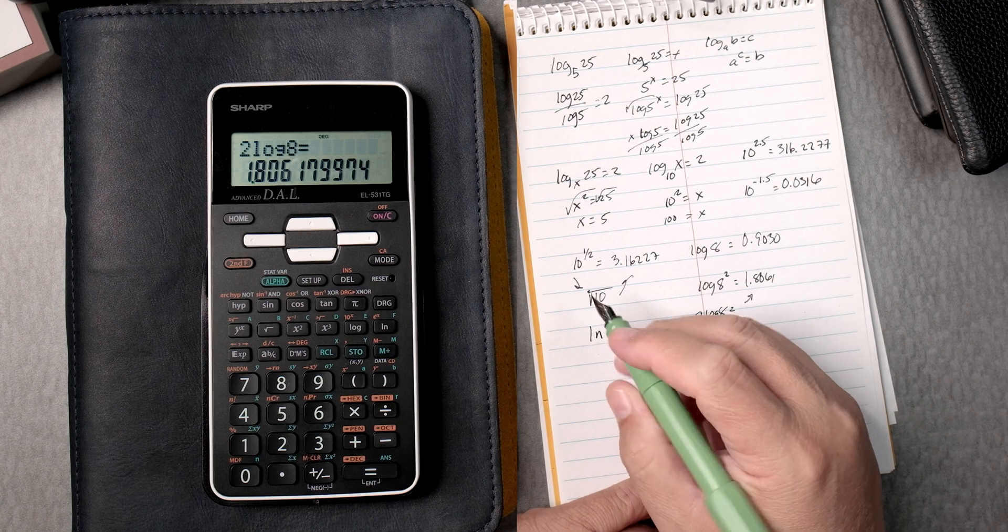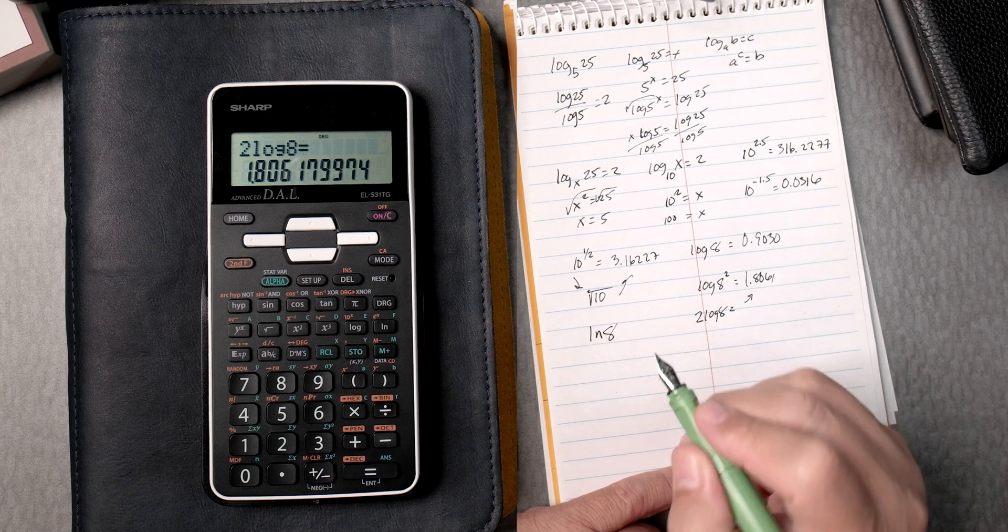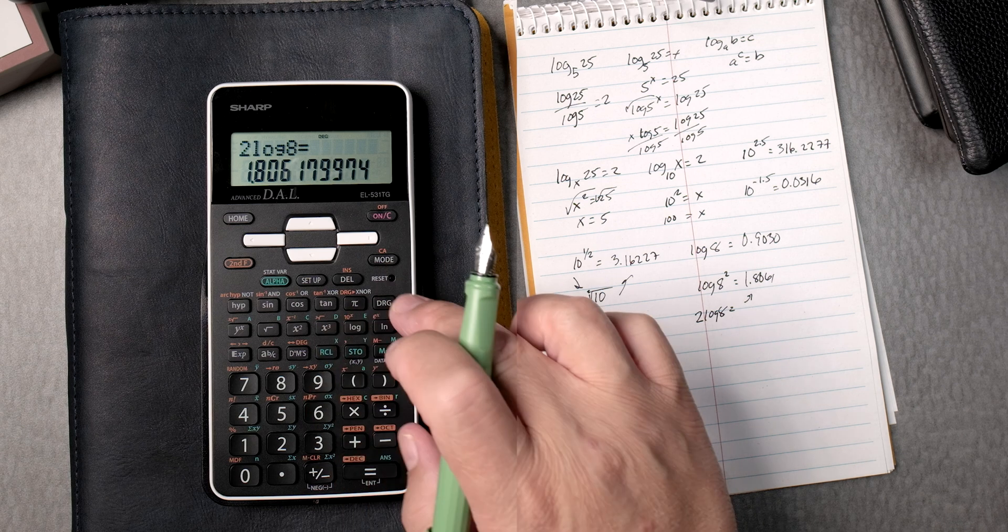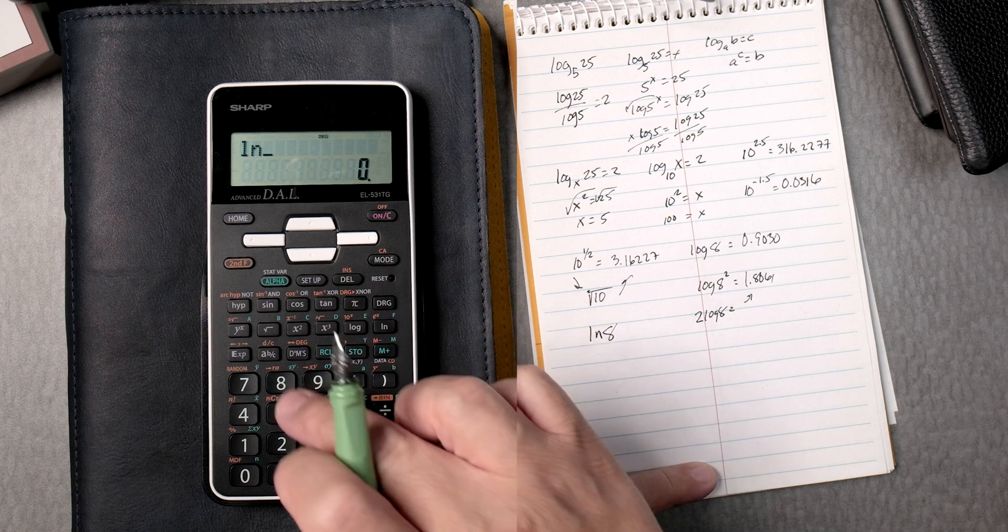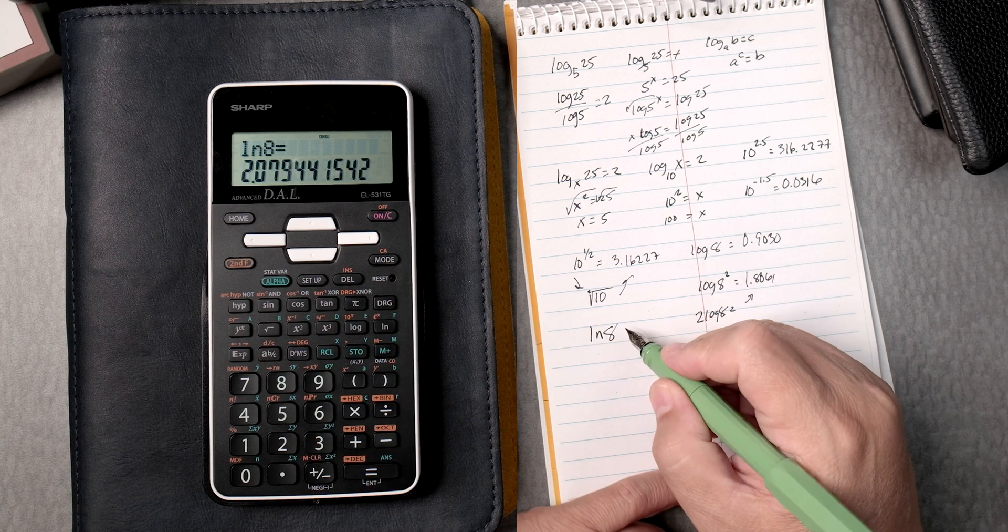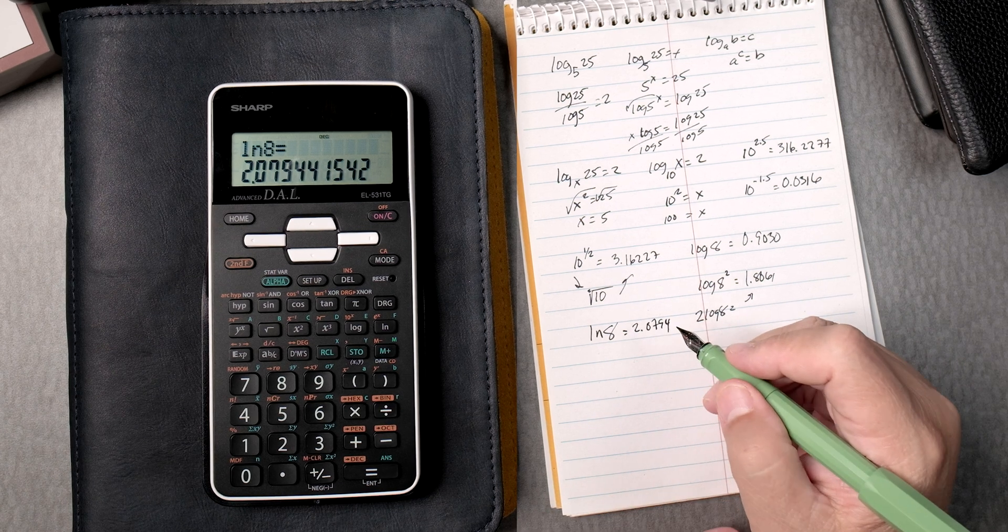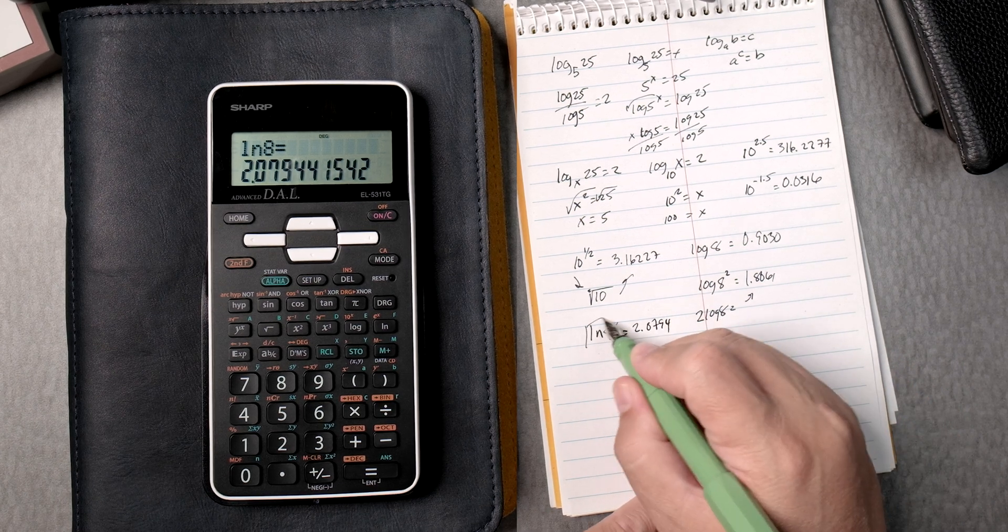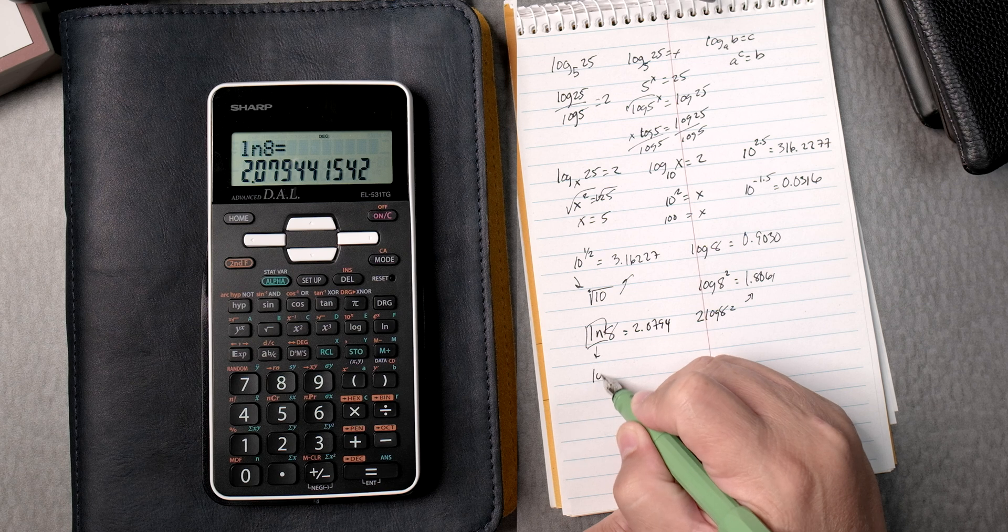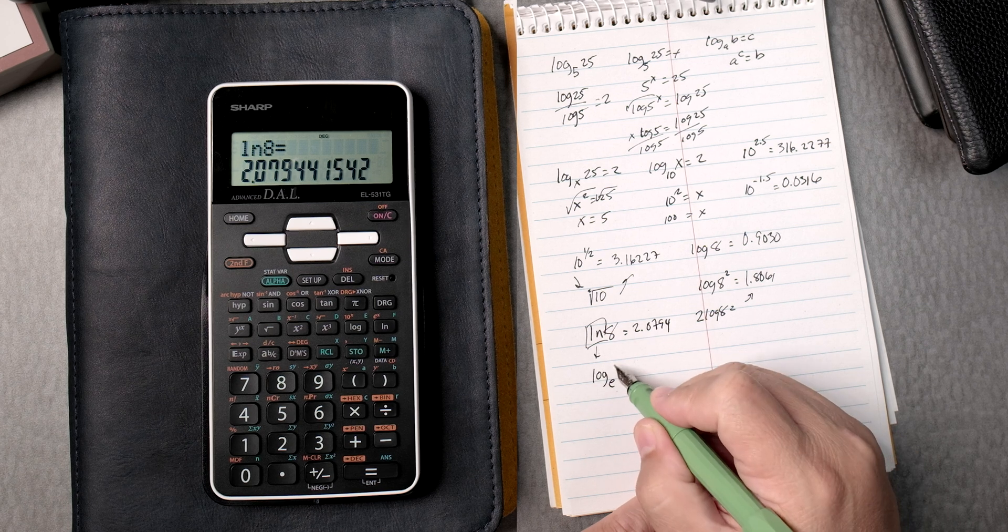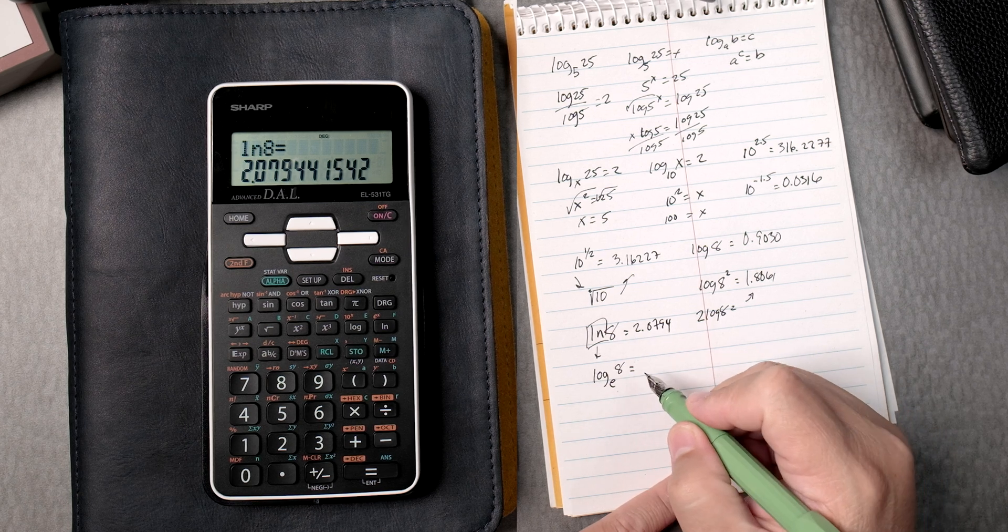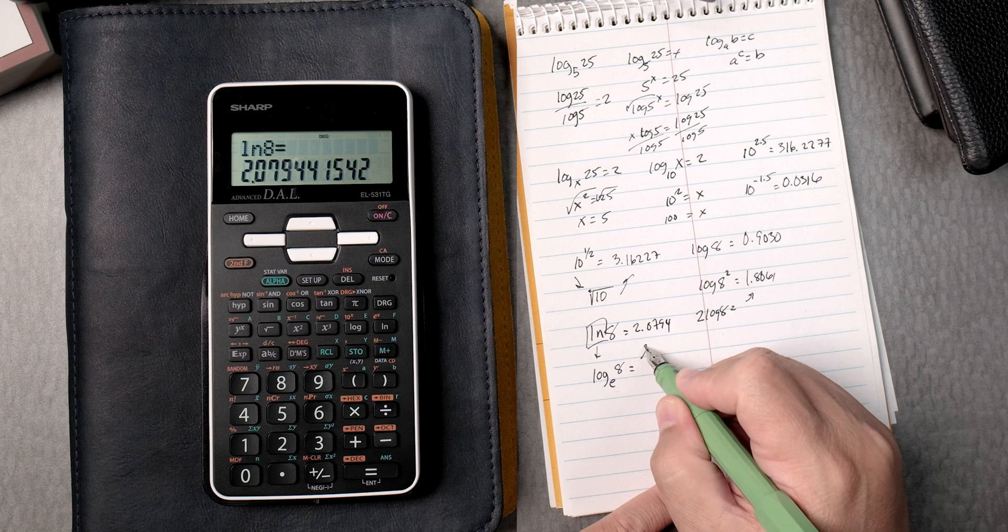Natural log. The natural log of 8. Natural logs right here. That gives you 2.0794. The natural log really is the log of base e, then 8. Okay? Which gives you that same answer.